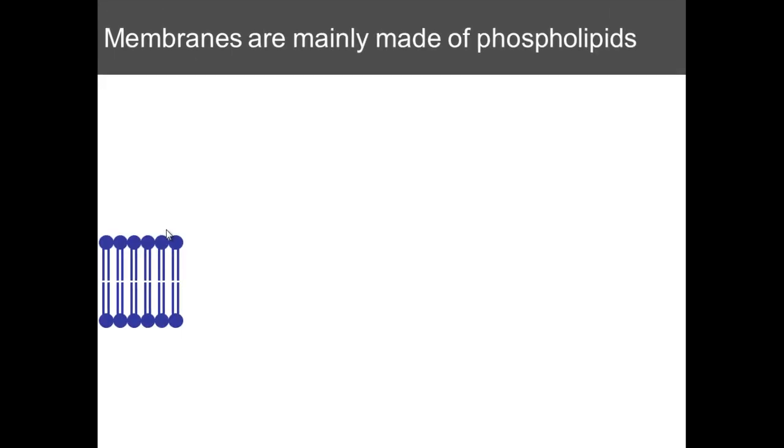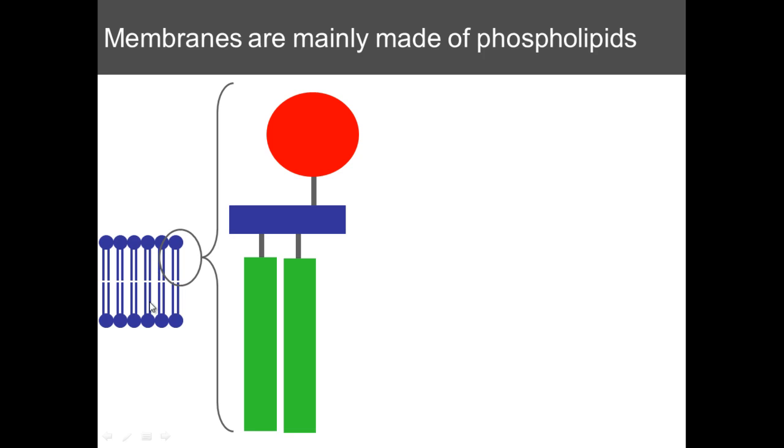The major constituents of membranes are these things called phospholipids. From the name, phospho, you probably guess that's a phosphate and lipids hence a fat. Sometimes you see the diagram drawn like this and this is what is referred to as a phospholipid bilayer as there are two sections of it, hence bilayer.